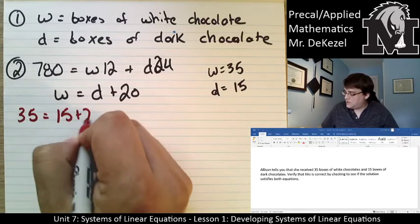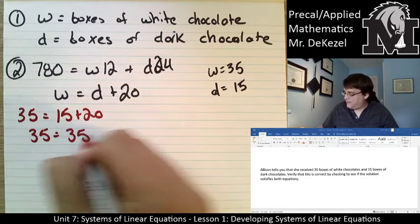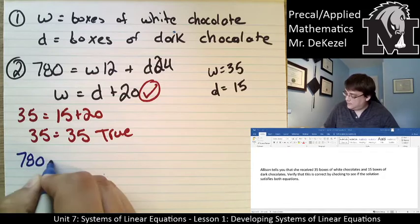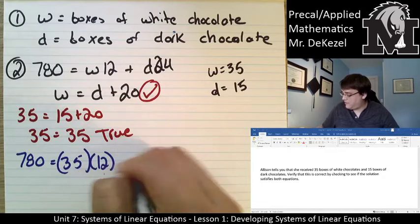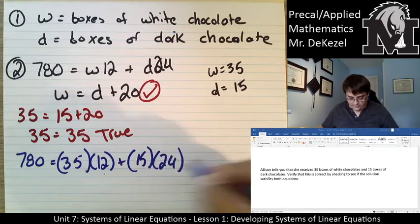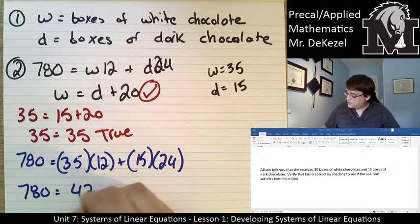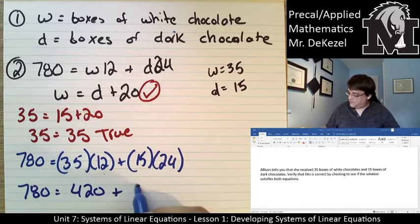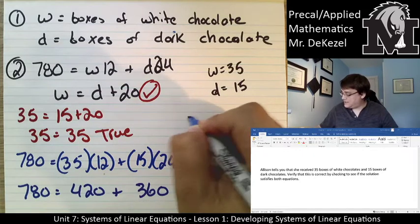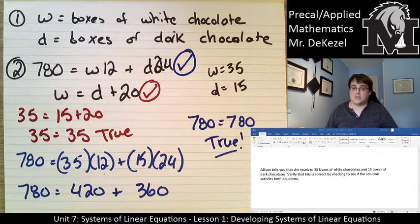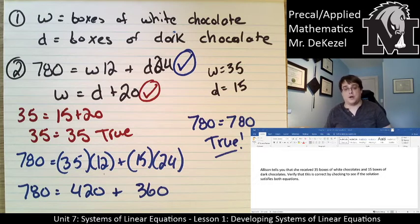Let's do the easy one first: W equals D plus 20. W is 35, and D is 15 plus 20 — so 35 equals 35. That is true, so this equation works. Now the other equation: 780 equals 35 times 12 plus 15 times 24. That's 420 plus 360, which equals 780. So 780 equals 780 — that's true as well. Allison is correct: she got 35 boxes of white and 15 boxes of dark chocolate.